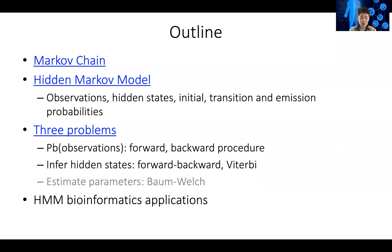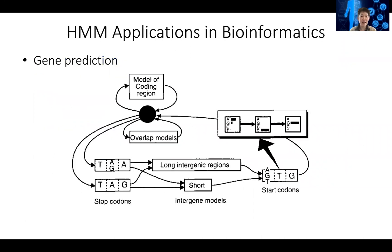Hidden Markov model has been used a lot in bioinformatics applications. I want to show you a few examples. The first is gene prediction. When the human genome was first sequenced, scientists used hidden Markov models to predict genes in the genome, because from existing knowledge of the genes, they have some idea what genes might look like.